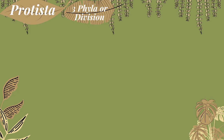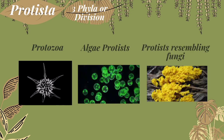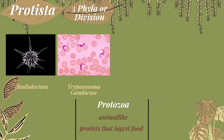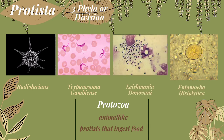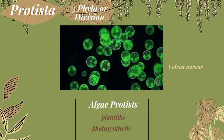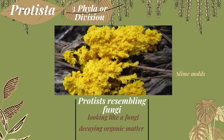Protista is classified into three phyla: Protozoa, the animal-like; algae protists, the plant-like; and protists resembling fungi. Protozoa or protozoans are a group of protists that ingest food. Examples of species under protozoa are Entamoeba histolytica, Foraminifera, Trypanosoma gambiense, and Leishmania donovani. Algae phyla are mainly photosynthetic — an example is Volvox. And protists resembling fungi look like fungi and also decay organic matter, but differ in cellular organization, reproduction, and life cycle. An example is a slime mold.